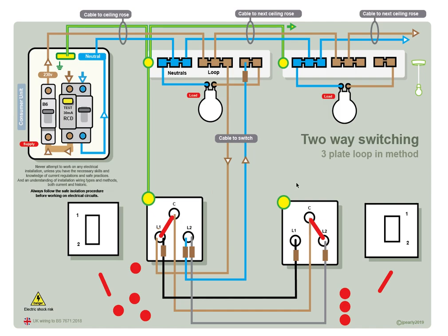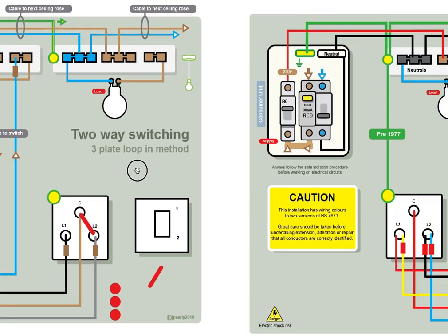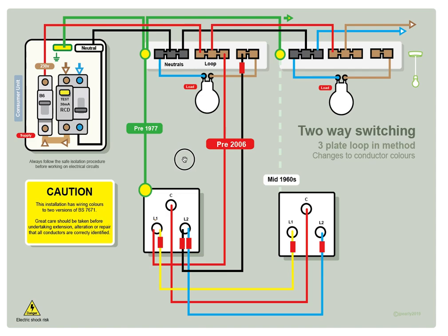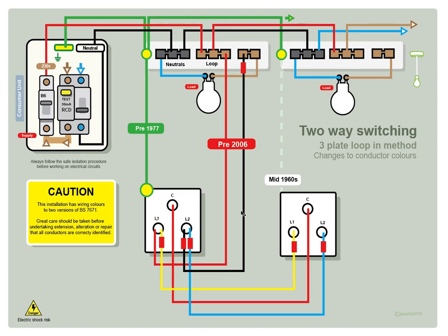This is with the modern colors, but go back a few years pre-2006, they used to have different colors for their conductors. The line color was red, neutral was black, and the strap colors were red, yellow, and blue. So you might see this. You might open a light switch and you might see this color arrangement. Same principle, just different colors.